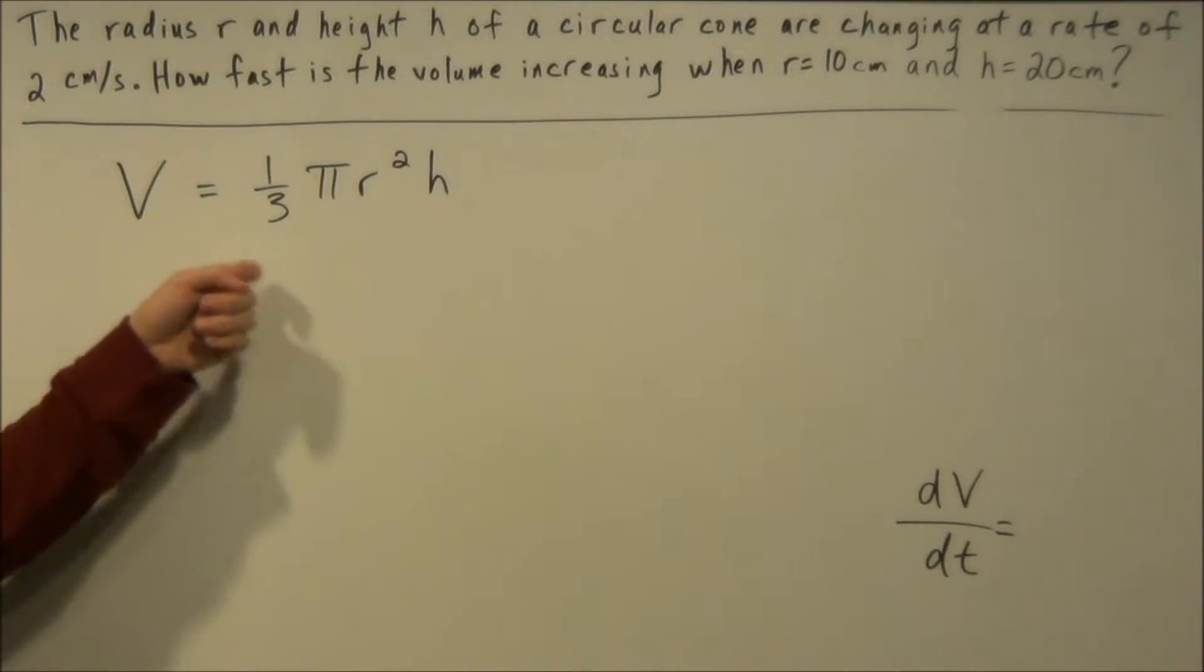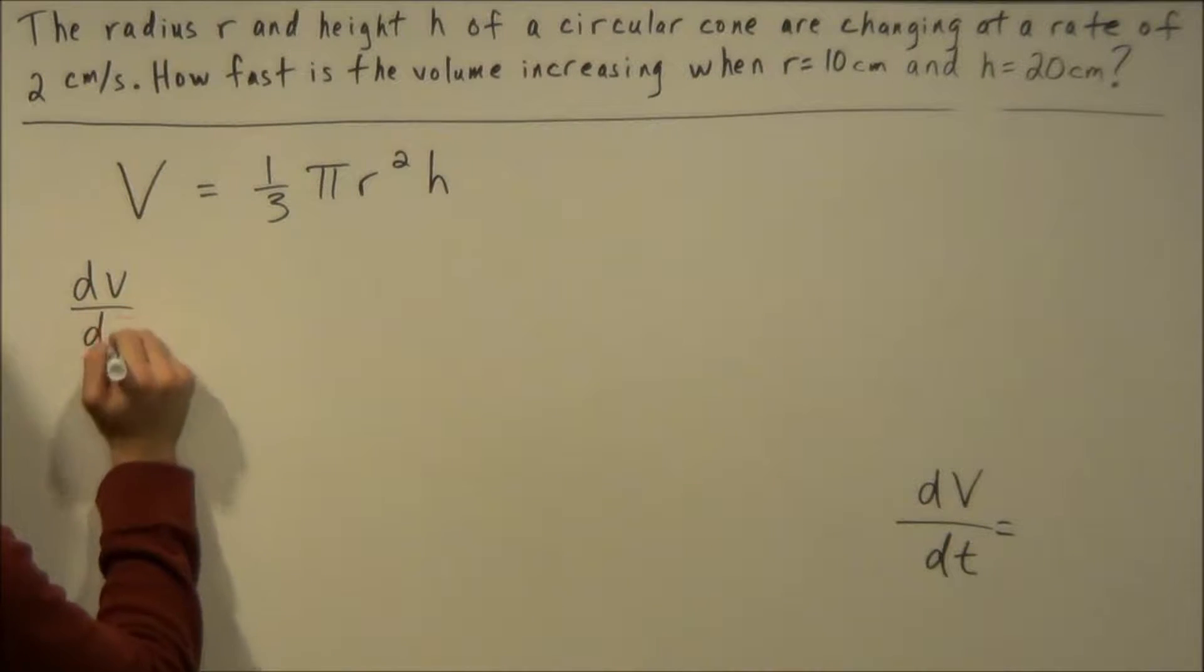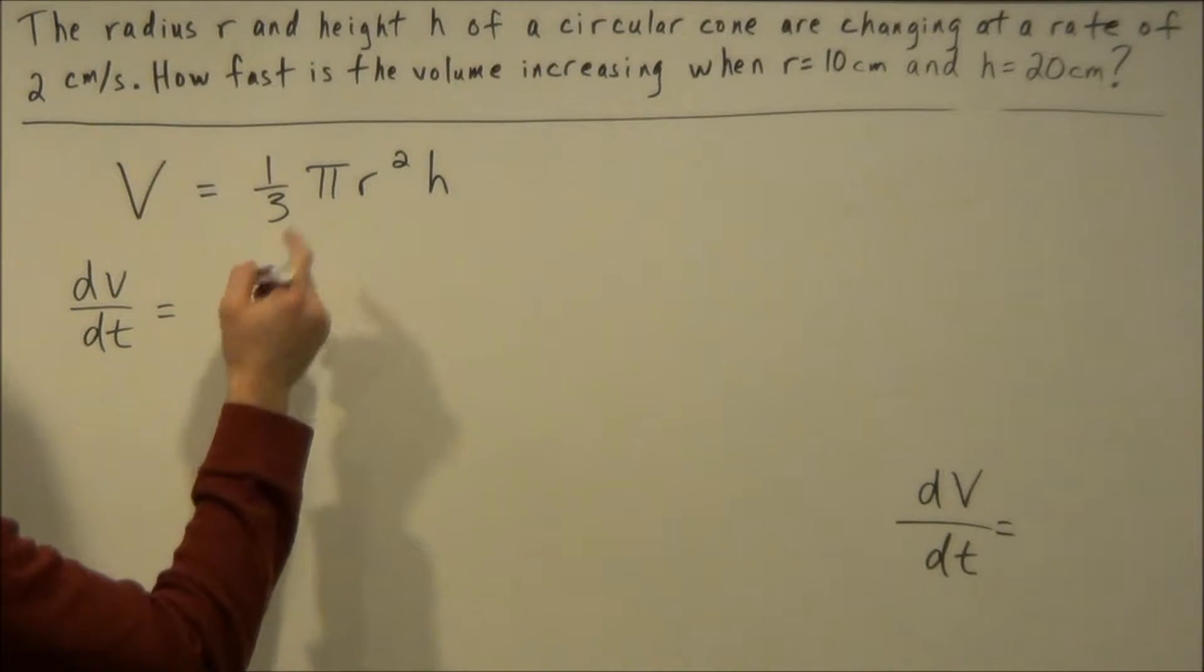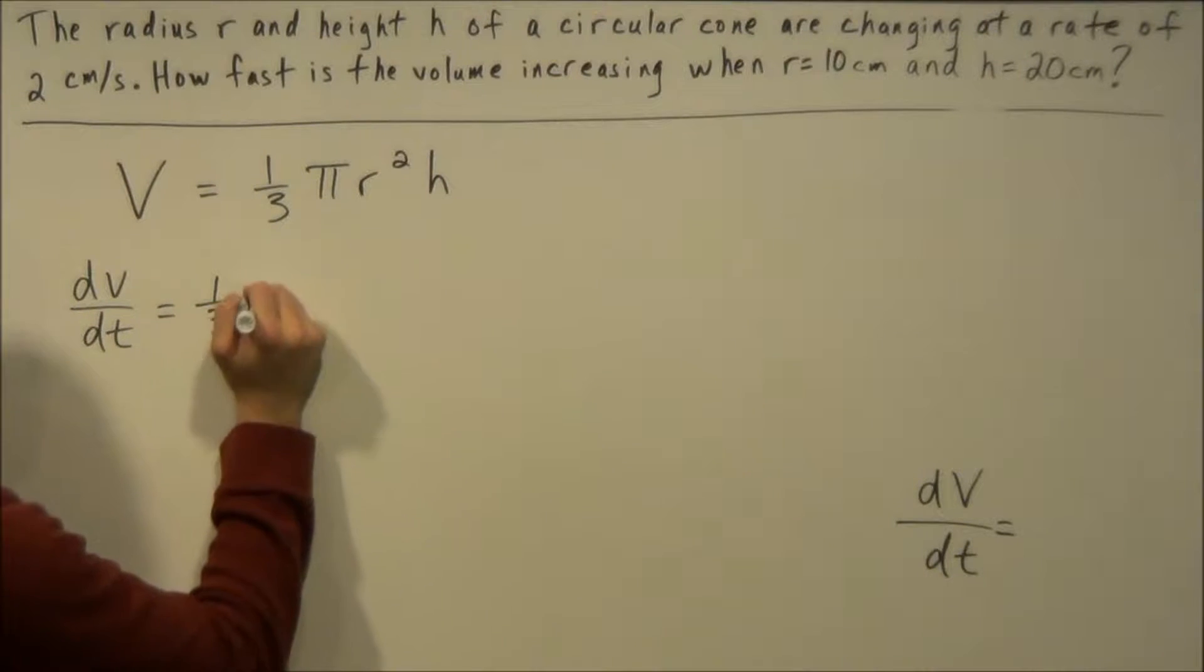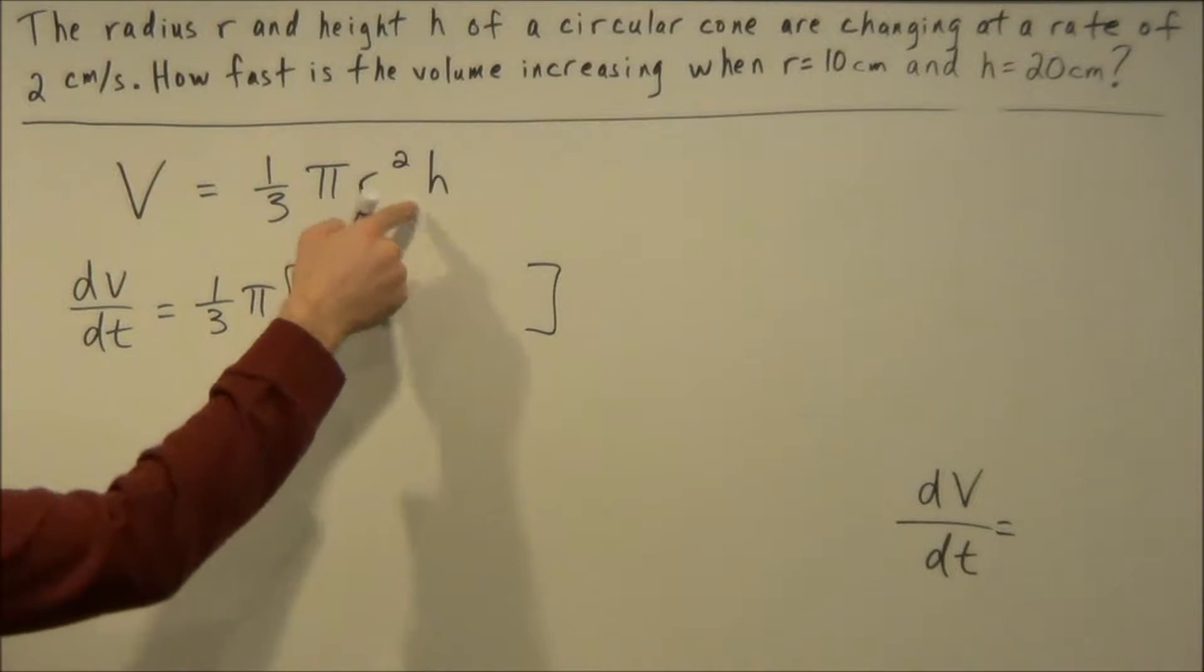So to take the derivative of both sides with respect to time we have dV/dt equals and we're going to ignore this constant one-third pi. And we're going to apply product rule to the r squared h here.